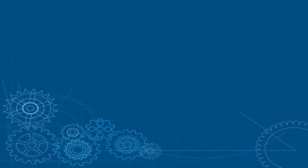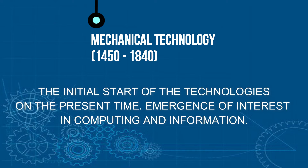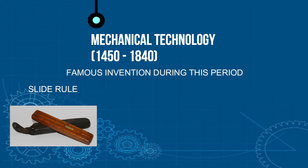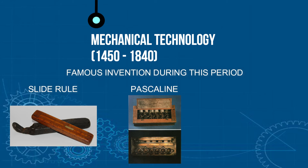Moving from pre-mechanical to mechanical technology, the mechanical technology is connected to the current technology that we use today. New technologies emerged during this time as interest in computing and information heightened. Notable inventions during this period were the slide rule, the earliest analog computer used to multiply and divide, and the Pascaline, the first calculator to be invented, an arithmetic machine created by Blaise Pascal.